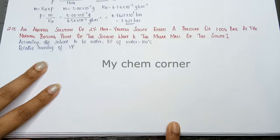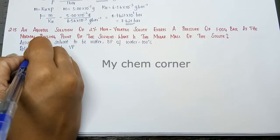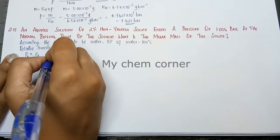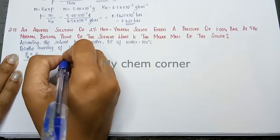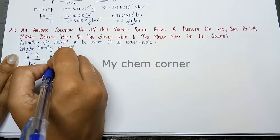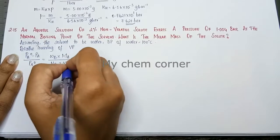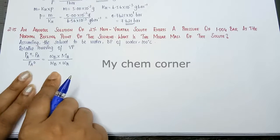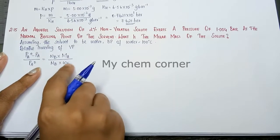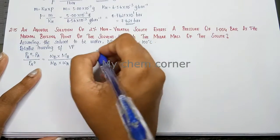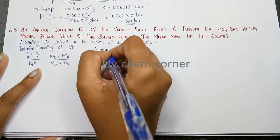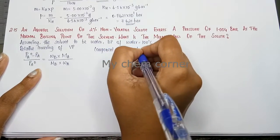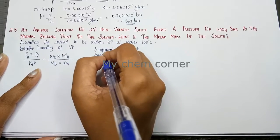So that is pa0 minus pa divided by pa0 equals wb into ma divided by mb into wa. Don't get confused, I'll explain you what these things mean. So now wherever we have component a, ma, wa, component a is going to depict solvent always. So that means component b should be solute.